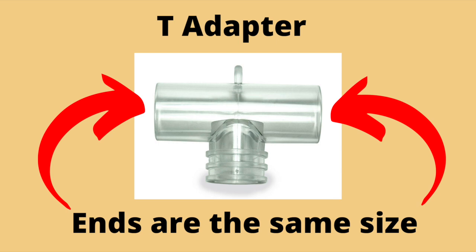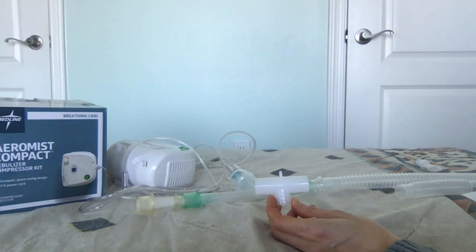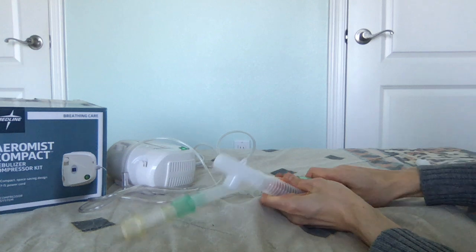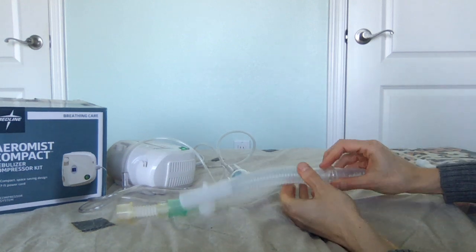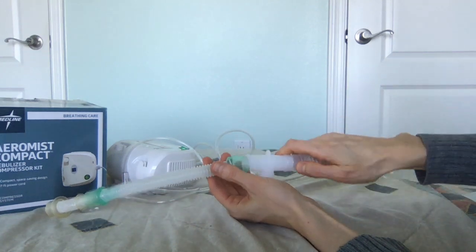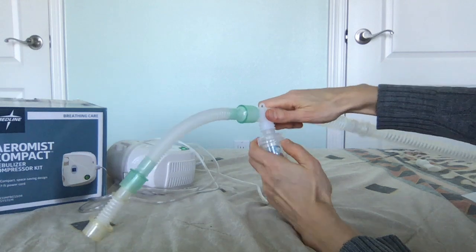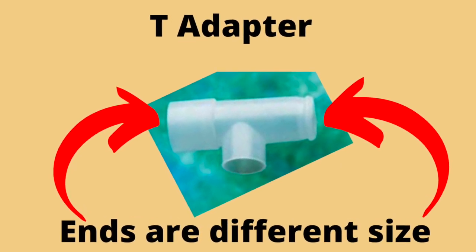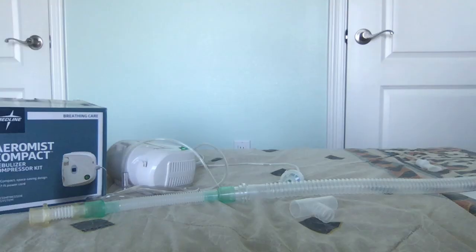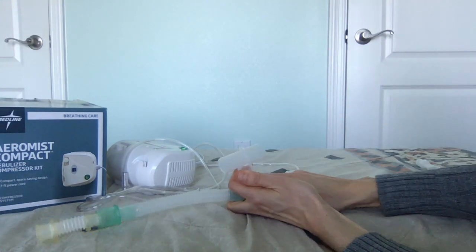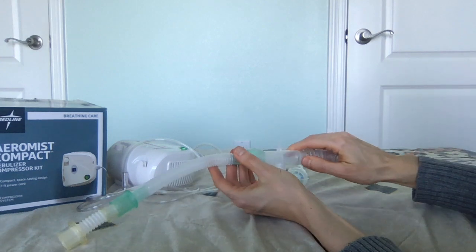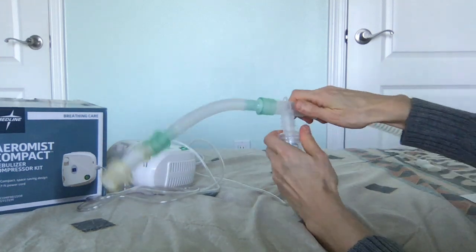The T-adapter comes in two basic forms. One T-adapter is the same size at both ends — if this is how yours looks, you will need to attach the reservoir tubing. Simply attach the reservoir tubing, connect it to the exhalation valve, then connect the rest of the tubing to the T-adapter. Now insert the nebulizer canister and you can nebulize. If your T-adapter has one small end and one large end, you can connect it directly to your ventilator tubing. The large end connects into your exhalation tube, the smaller end connects into the rest of the tubing. Attach the nebulizer canister and you're ready to nebulize.